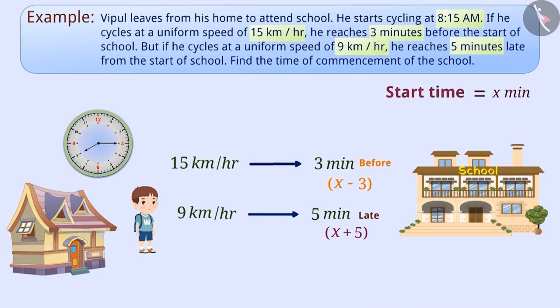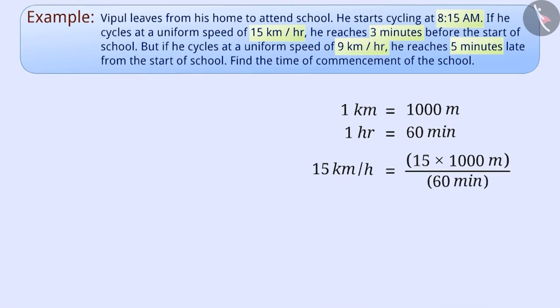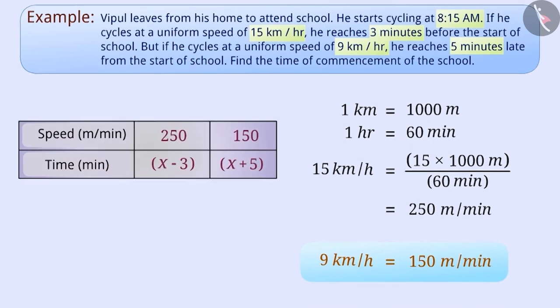Since 1 km = 1000 meters and 1 hour = 60 minutes, we have 15 km/hr = (15 × 1000 meters) ÷ (60 minutes) = 250 meters per minute. Similarly, we can write 9 km/hr as 150 meters per minute. We can show this in a table form like this.